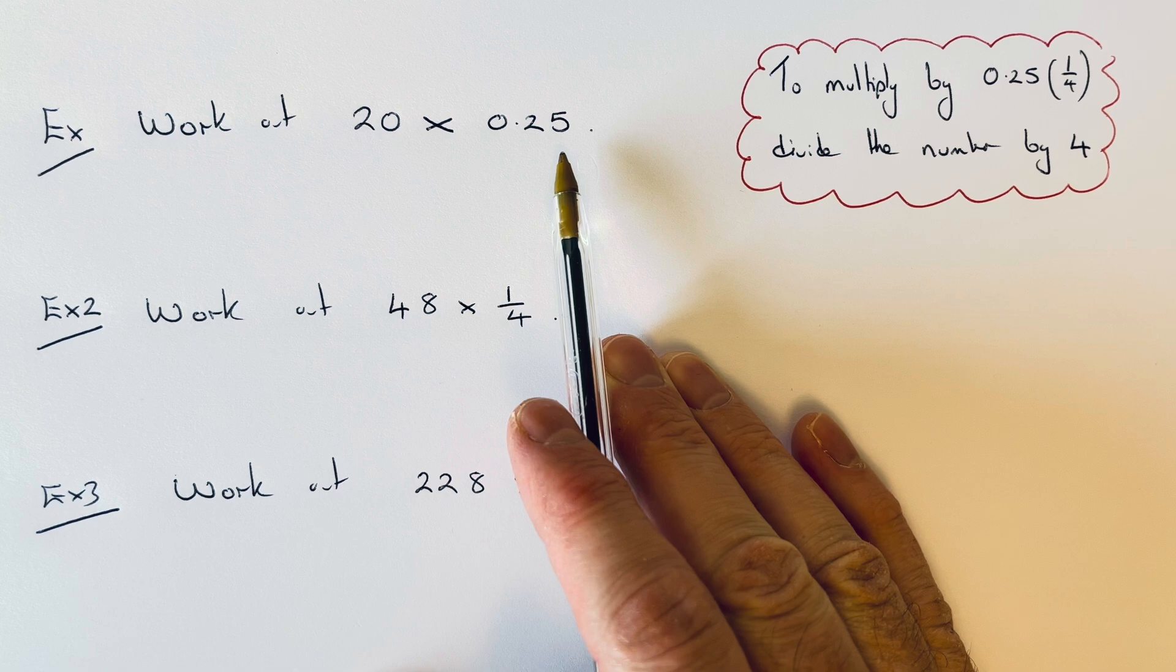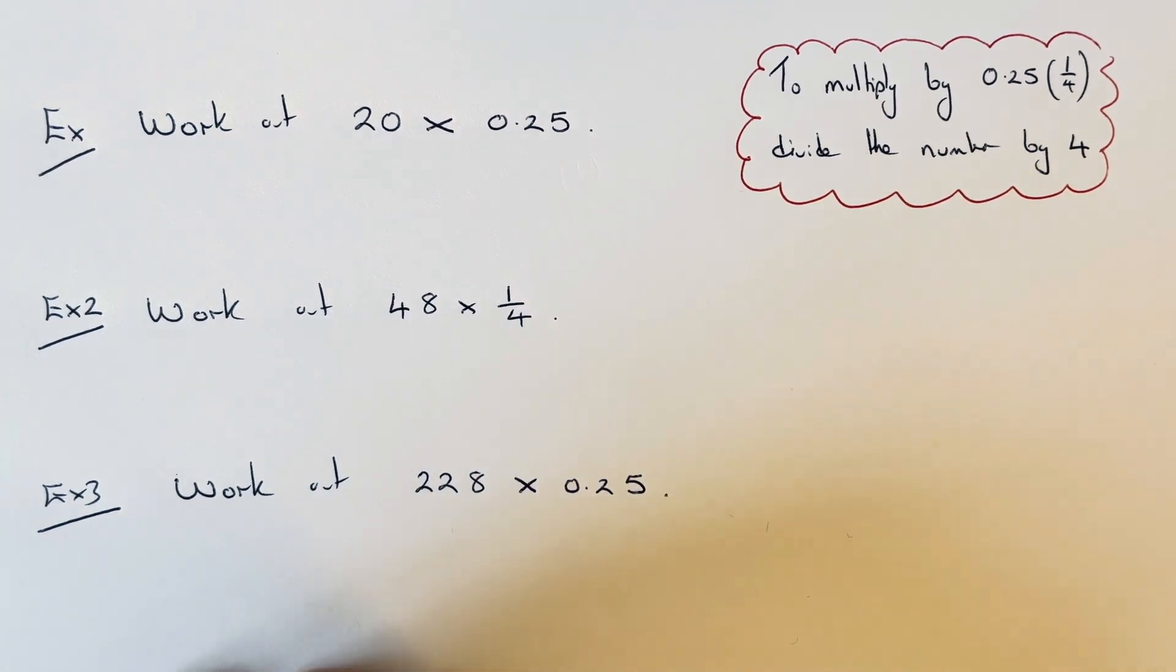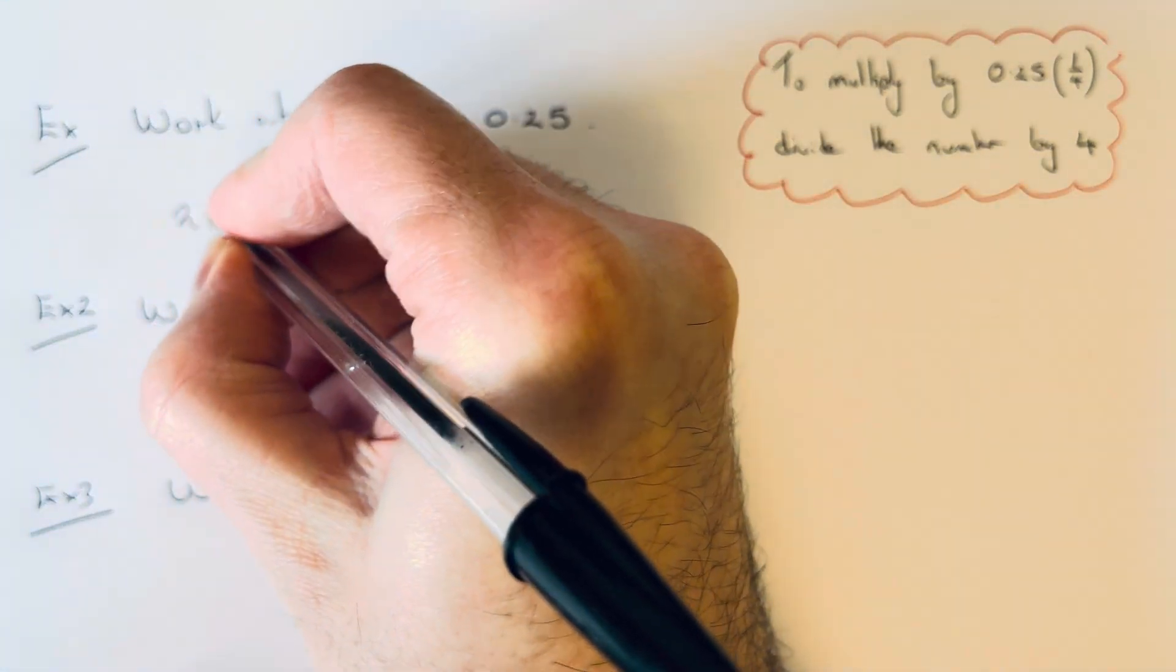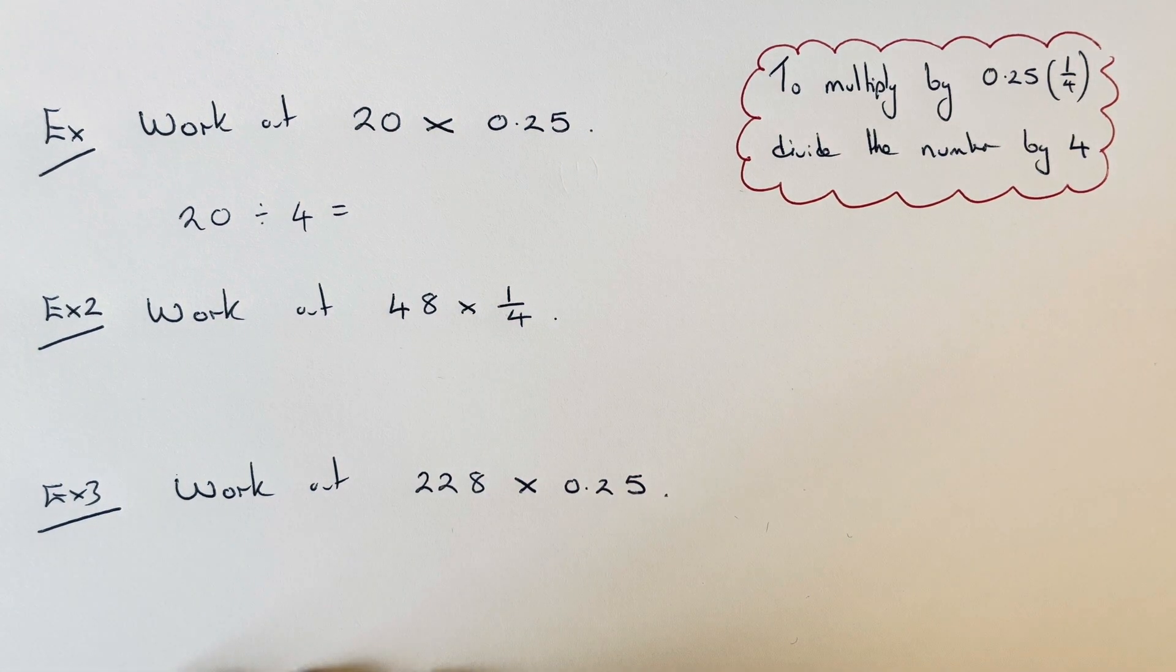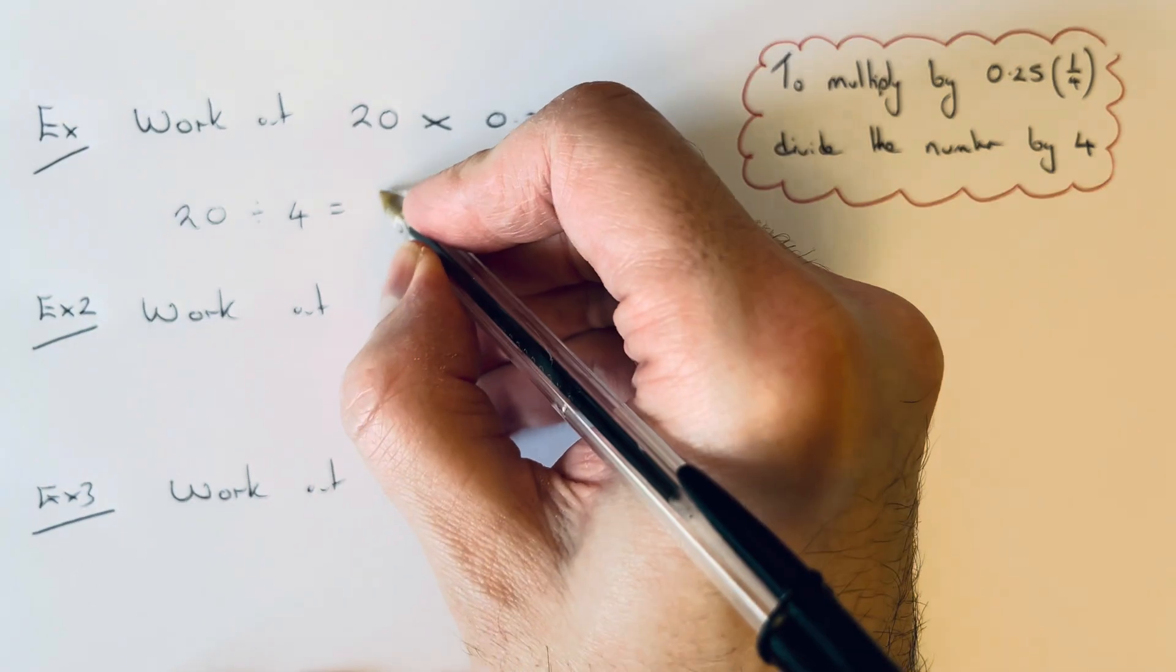So work out 20 times 0.25. So again, the quick way of doing this will be to just divide the number by 4. So 20 divided by 4 is 5.